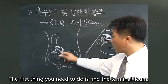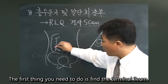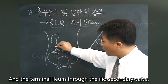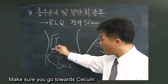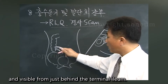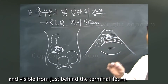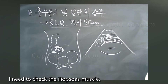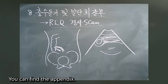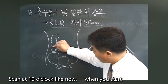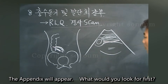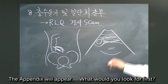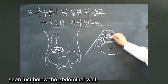The first thing you need to do is find the terminal ileum, through the ileocecal valve. Make sure you identify the cecum, visible from just behind the terminal ileum, then check the iliopsoas muscle to find the appendix. Scanning at 10 o'clock, the appendix will appear just below the abdominal wall.